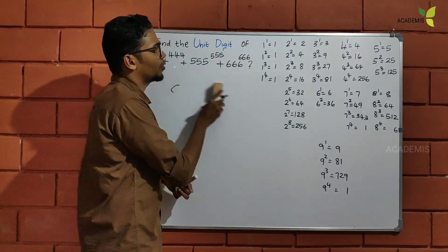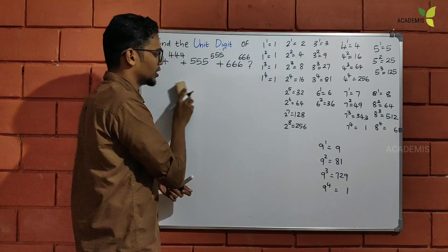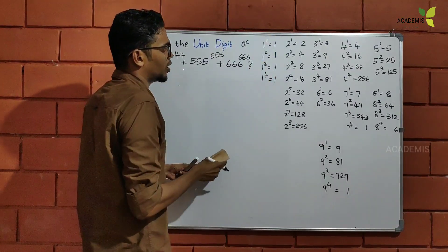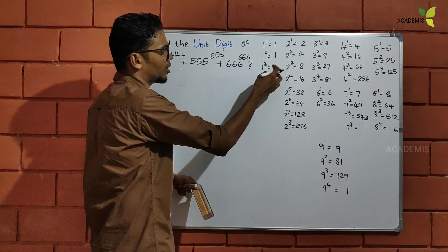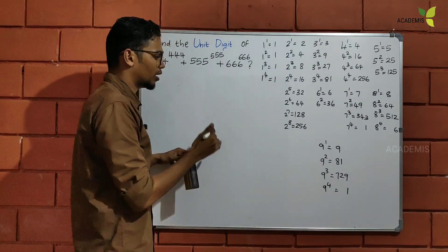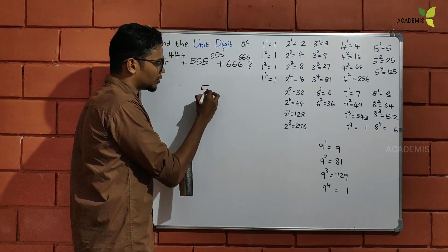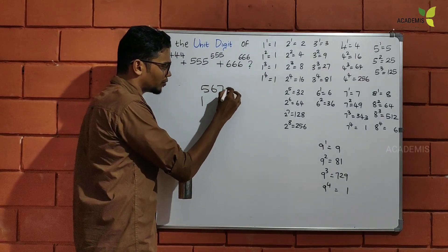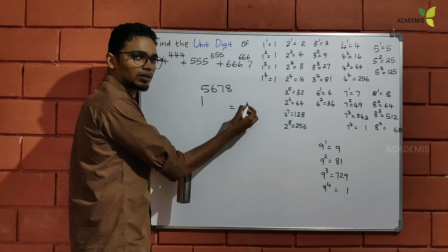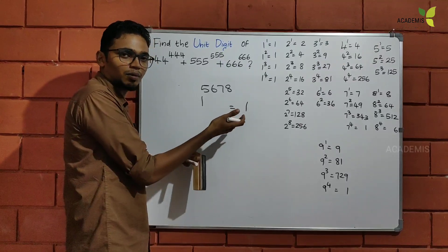Now, I have a little number. 1 raised to 1 is 1. 1 squared is 1. No matter the power, 1 raised to any exponent is always 1. What is the last digit? The last digit is always 1.